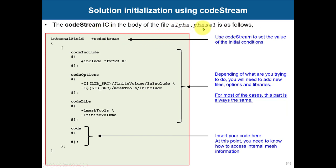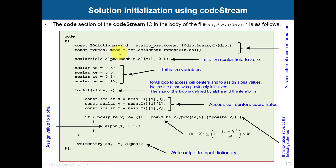For a codeStream initial condition, I call the case 'primaryPhase' and we're applying codeStream in phase one. You have the body of the codeStream which is pretty much the same, and in the 'code' section is where you implement your actual initialization. Here we want to access the internal mesh — you use specific keywords to access internal information. This is a scalar field and you access the internal cells, whereas previously in boundary conditions you accessed the boundary surfaces.